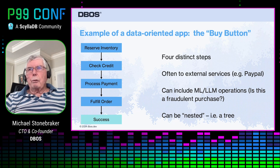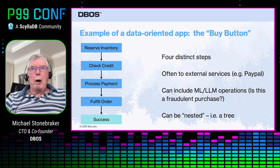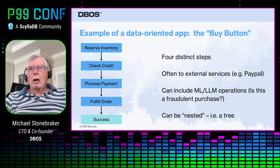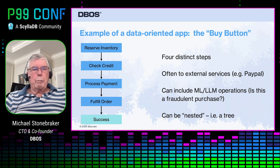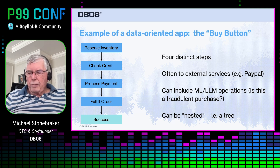Sometimes there are two external services — for example, PayPal. They may include machine learning, large language models, operations. You may put into this workflow: is this a fraudulent purchase? And if so, you want to bail on it. And of course, in more complicated cases, this may be a tree rather than just a line. So this is the kind of applications I'm talking about.